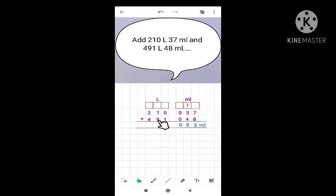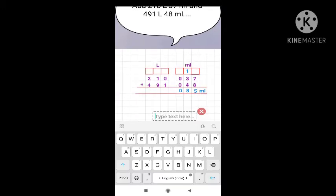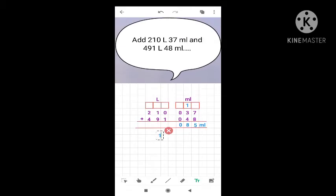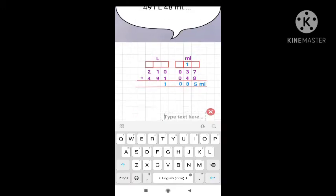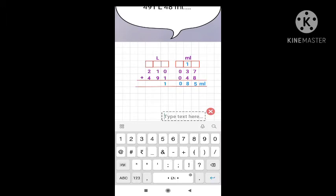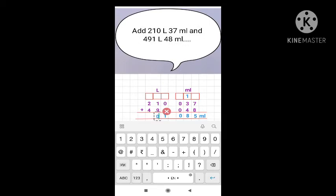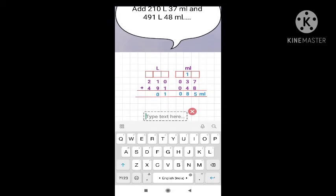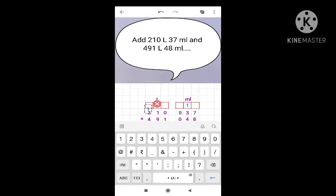Now we have to add the values of liter. So 1 plus 0, yes, 1 plus 0 is 1. Now add 9 and 1. When we add 9 and 1, we get 10. So 2 digit number. We have to write 0 here. And this 1 will go here in this box.